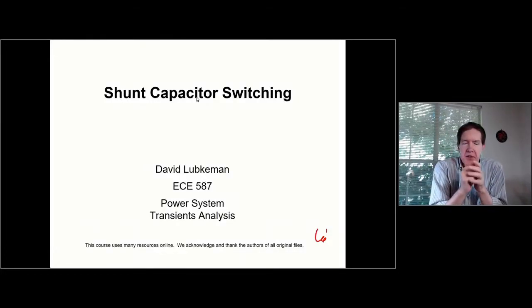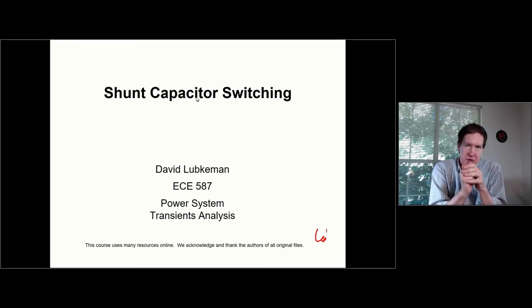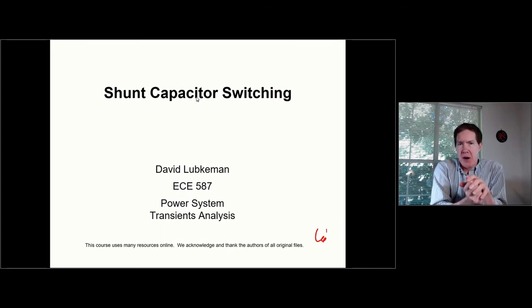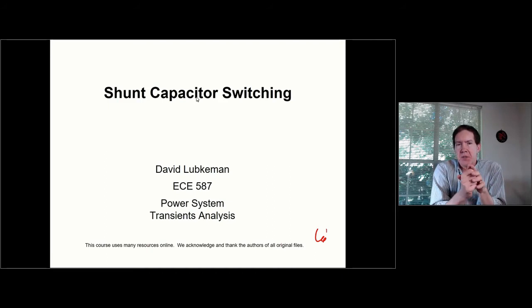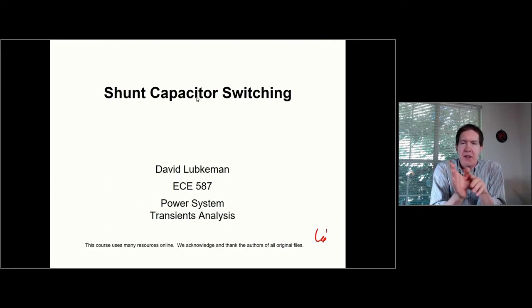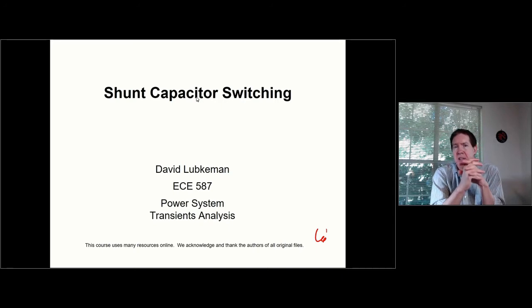We're ready to take a look at our second transient use case, which is shunt capacitor switching. Where you would typically see shunt capacitors would be for power factor correction. This is normally associated with improving voltage profile, say on distribution feeders, and also reducing losses. But when we switch these capacitors in, they also cause transients, which could create some power quality problems. We're going to be looking at that in this particular lecture.